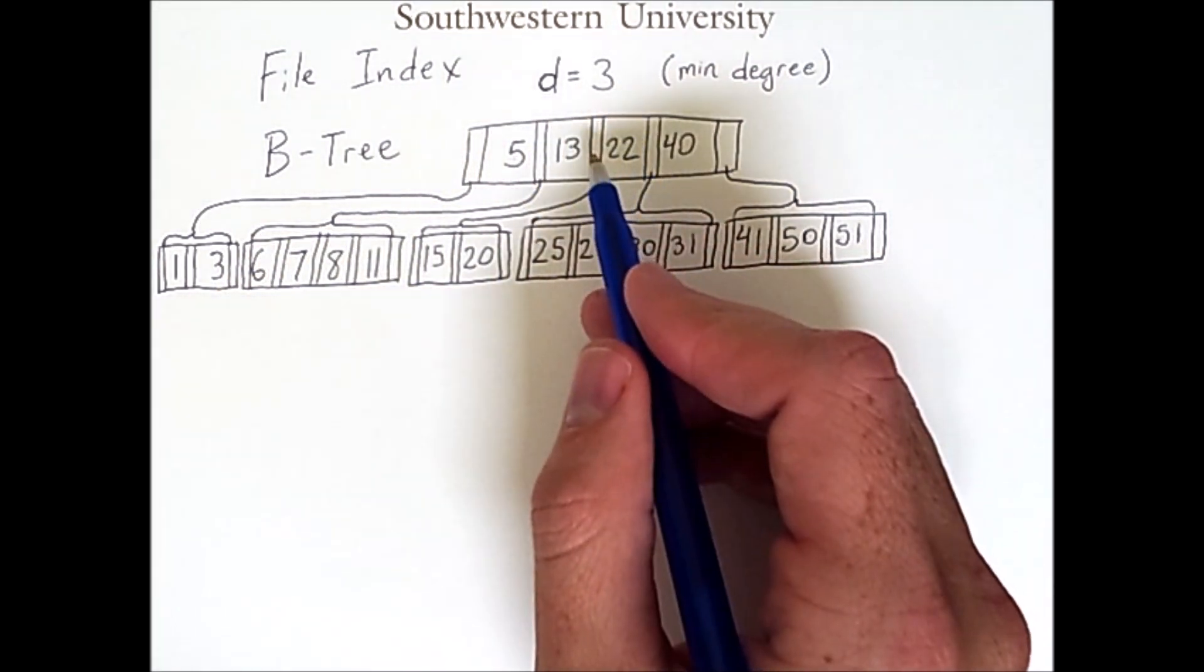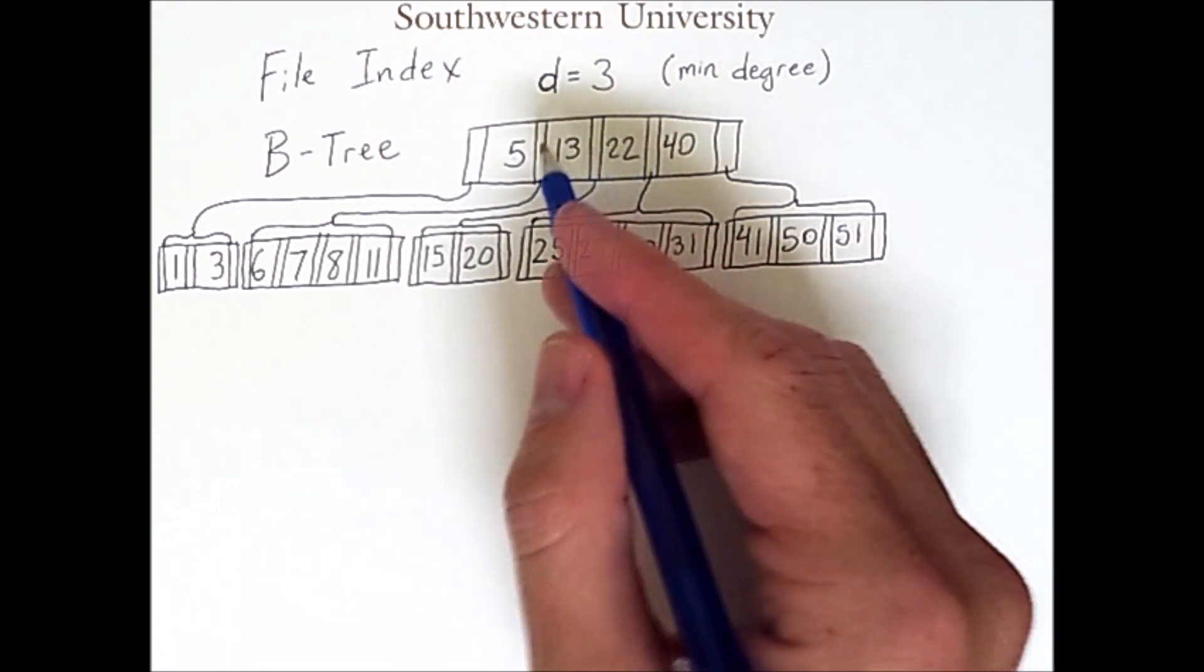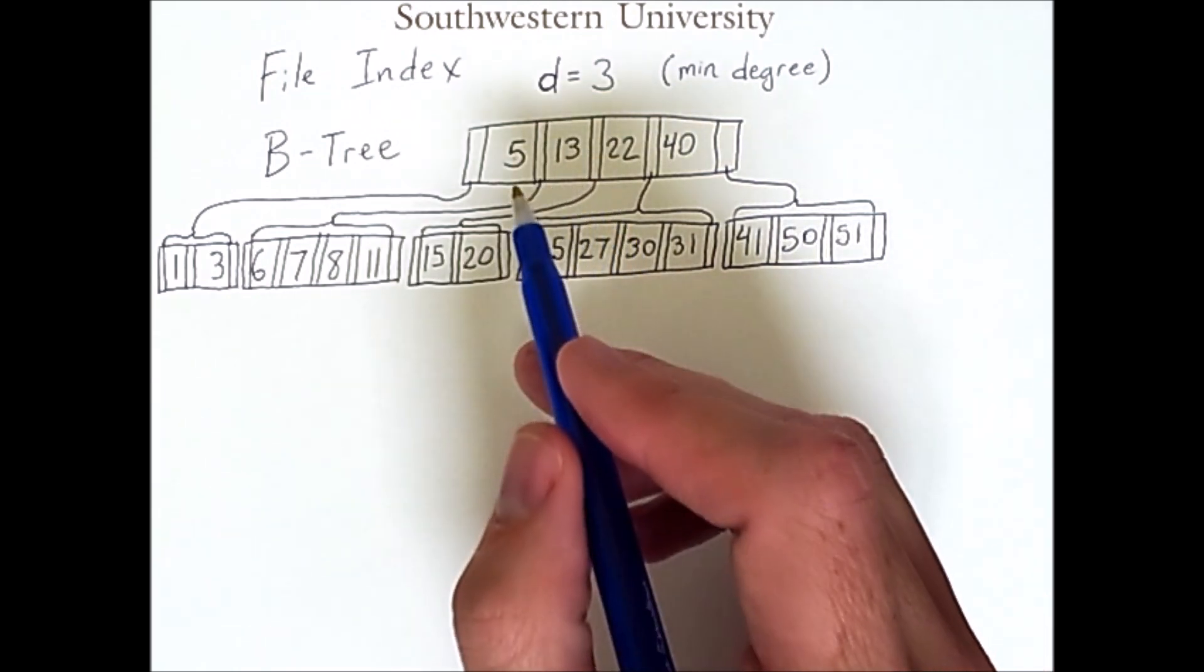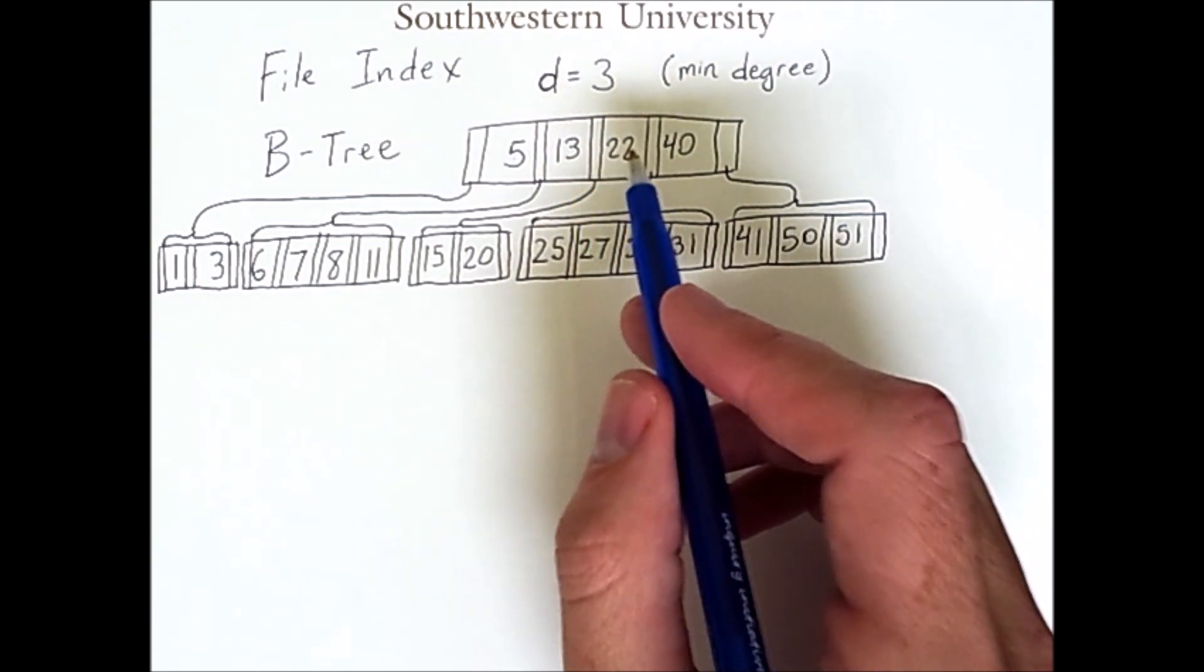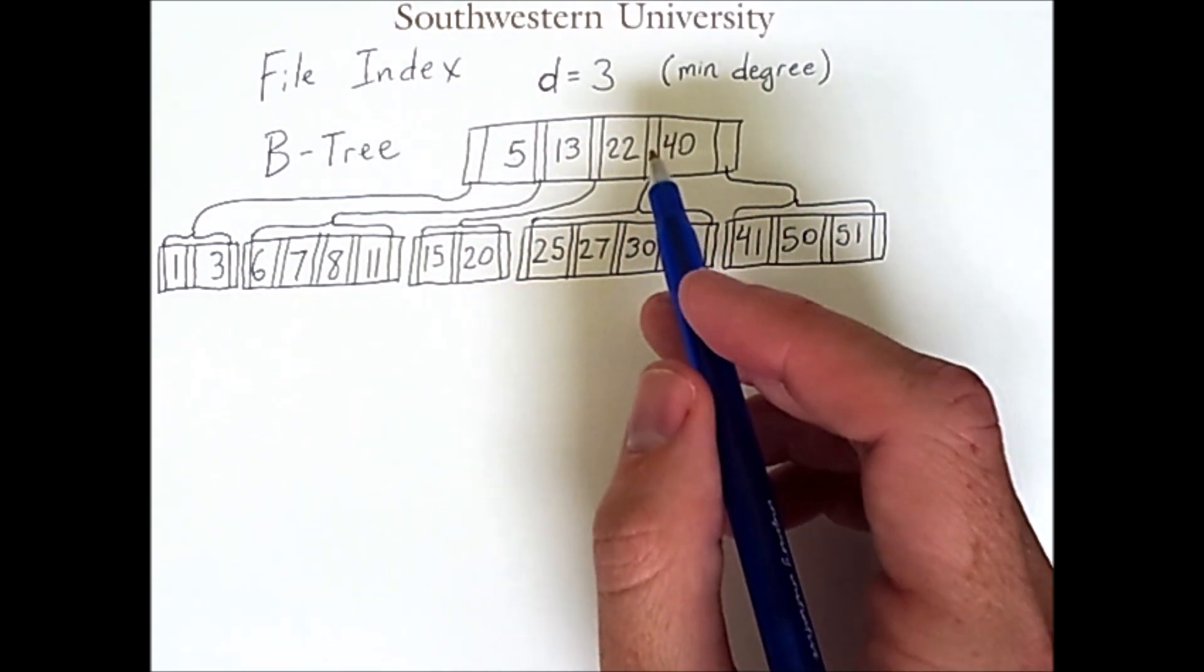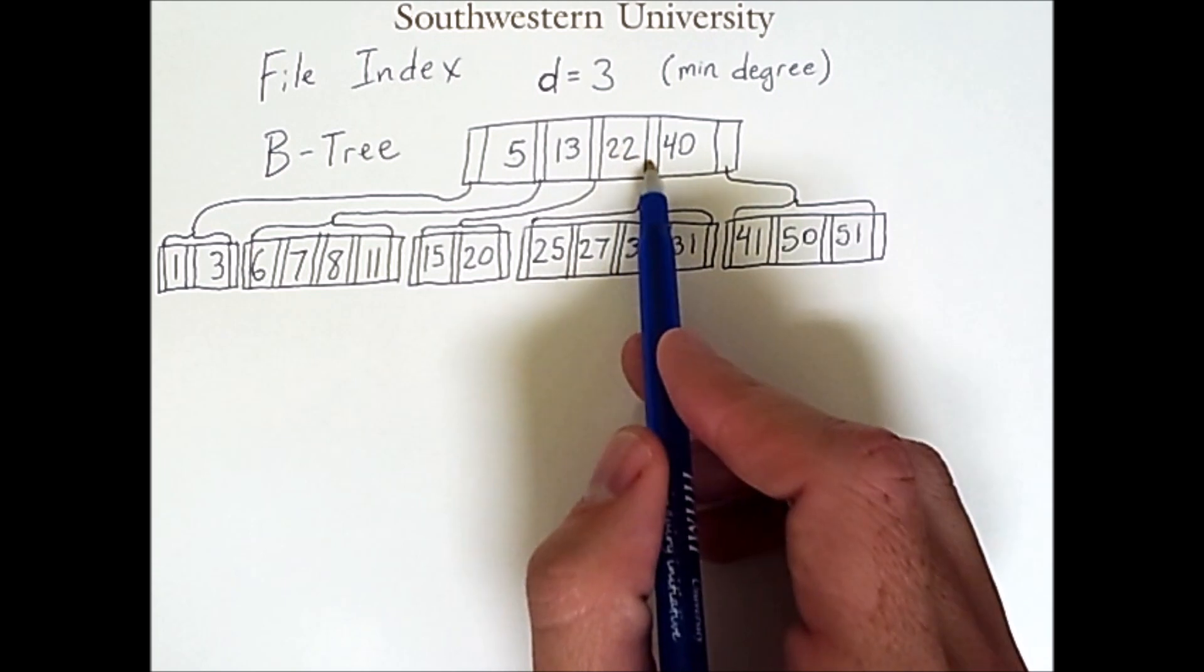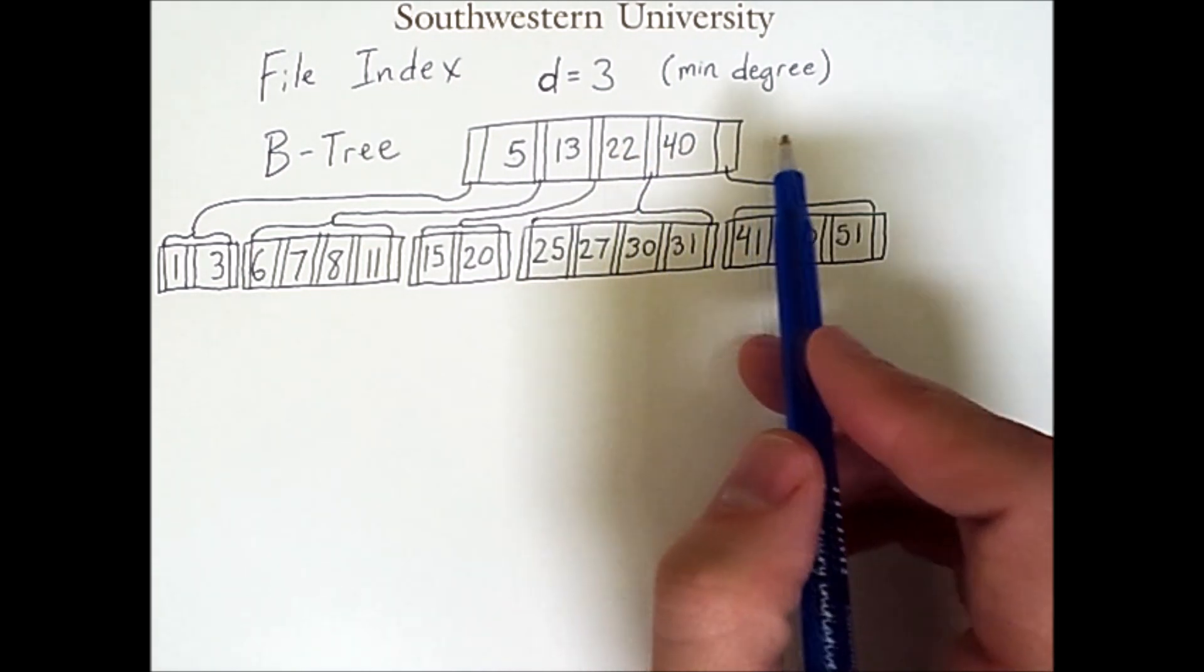Now you can change this parameter to get different tree sizes. Another aspect of this parameter is that every node has at most 2d minus 1 keys, which means there are at most 2d child pointers. So this node has one, two, three, four, five child pointers.